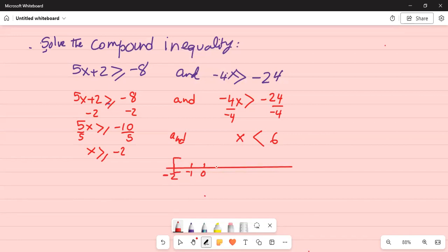Now on the right hand side of 0 we have 1, 2, 3, 4, 5, and 6. x is less than 6, and there is no equal to sign, so it's an open bracket.